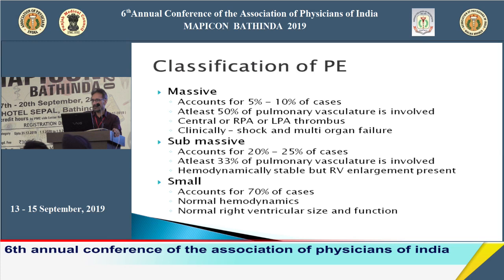Sub-massive pulmonary embolism accounts for 20 to 25 percent of cases, with at least one-third of pulmonary vasculature involved. These patients are hemodynamically stable — BP around 90 to 100 — and show RV enlargement on echocardiography. Small pulmonary embolism constitutes the majority of patients with normal hemodynamics and normal RV size and function — these are the hardest to diagnose clinically.